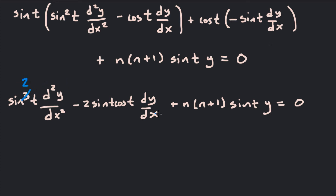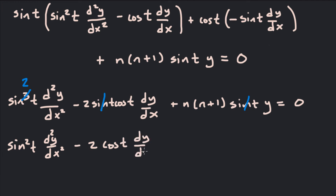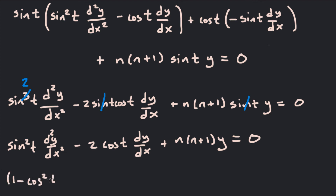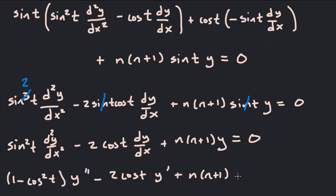Dividing through by sine t, we get sine squared t times d²y/dx² minus 2 cosine t times dy/dx plus n times n plus 1 y equals 0. This is getting much, much closer. The only thing left to do is remember a trig identity: 1 minus cosine squared t equals sine squared t. So sine squared t can be replaced by 1 minus cosine squared t. Then we get 1 minus cosine squared t times y double prime minus 2 cosine t times y prime plus n times n plus 1 y equals 0.